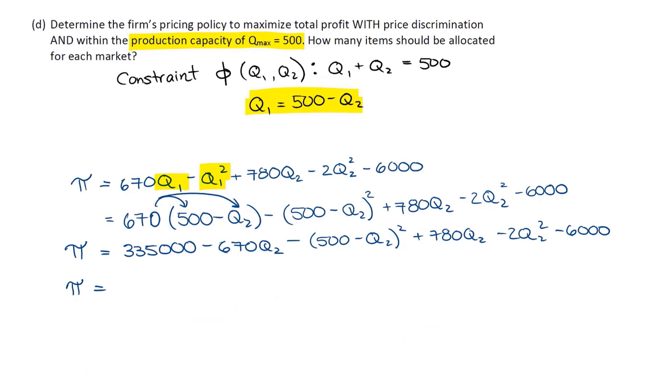So I have 335,000 and the constant 6,000. Subtracting 6,000, I get 329,000. I have negative 670Q2 and 780Q2, leaving me with 110Q2 minus 2Q2 squared. And then the last term, 500 minus Q2 all squared.